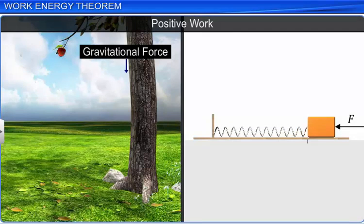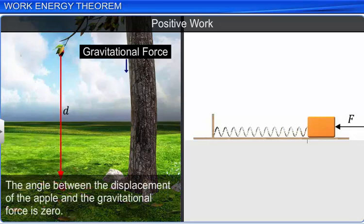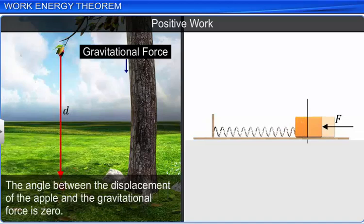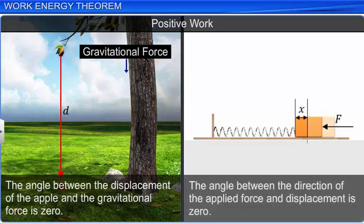An example of positive work is when an apple falls freely towards the earth — the work done by the gravitational force on the apple is positive. In this case, the angle between the displacement of the apple and the gravitational force is zero. Similarly, when a spring is compressed, the work done by the compressing force is positive. In this case too, the angle between the direction of the applied force and displacement, which is the compression of the spring, is zero.